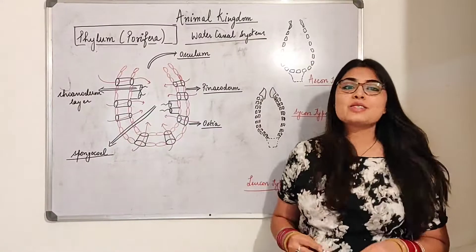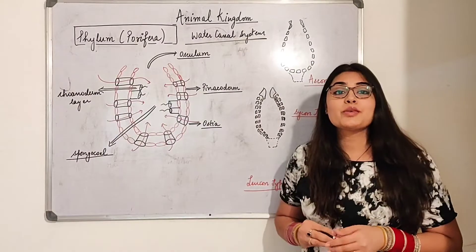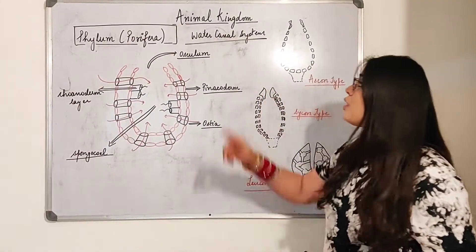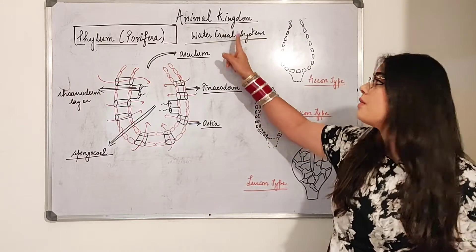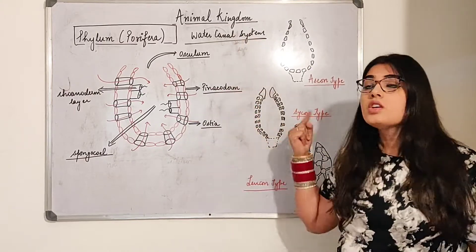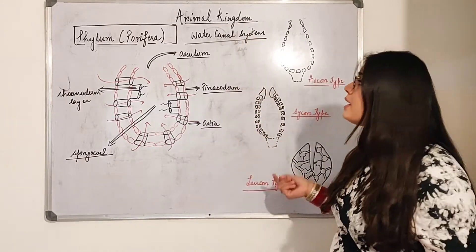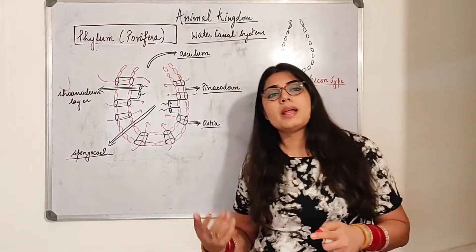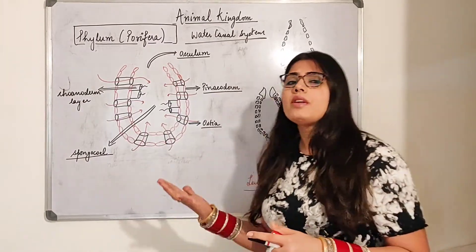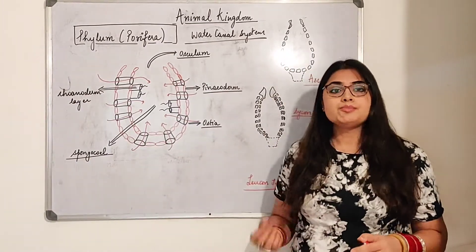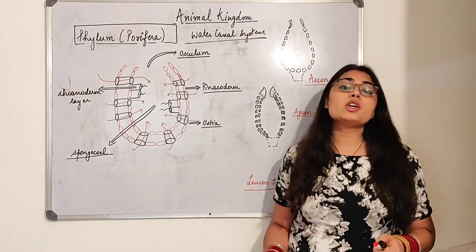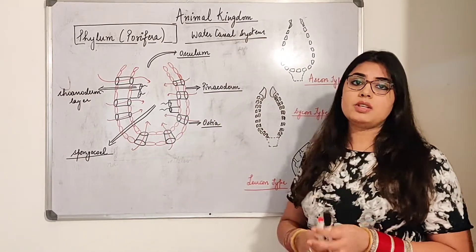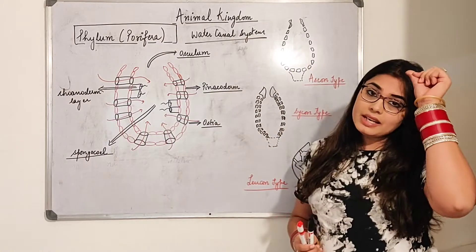Hi guys, welcome back to yet another video from Bio Buddy. In this video we will be moving forward with the Water Canal System (WCS). In the previous video I told you about the body plan, general characteristics, habit, habitat, body plan, coelom — everything was discussed. I told you that in the next video we will be moving forward with the Water Canal System, so let's just get started.